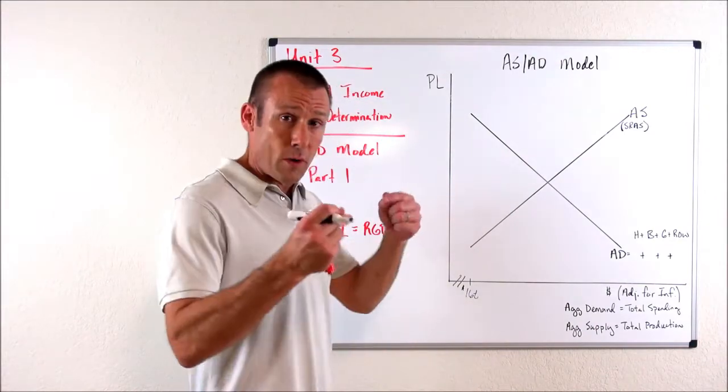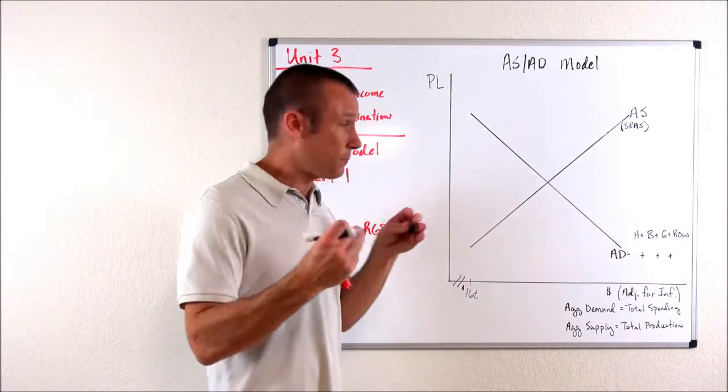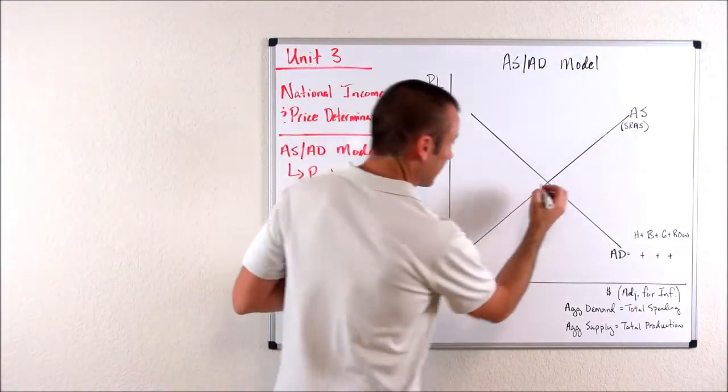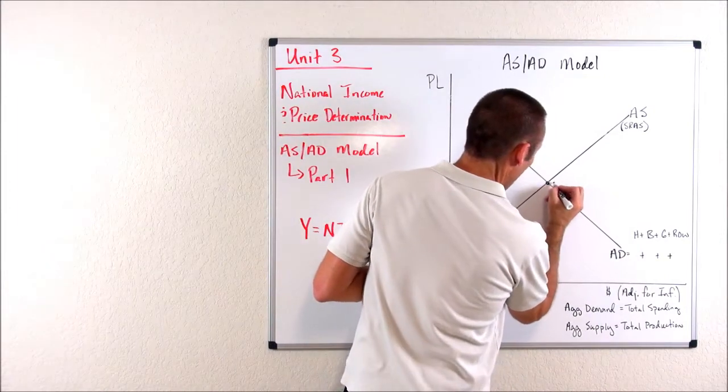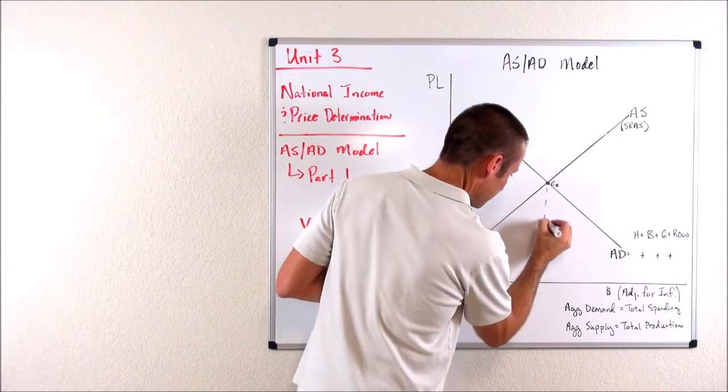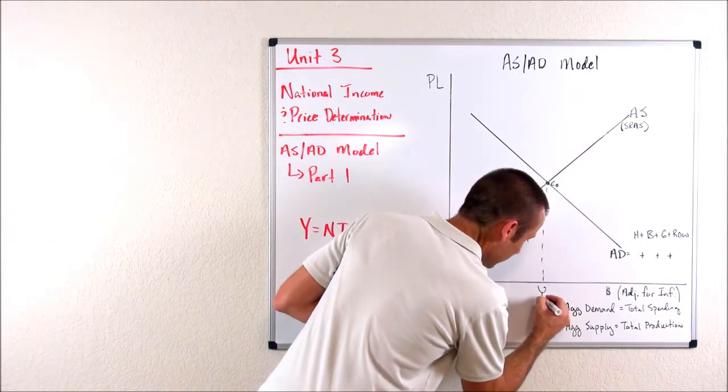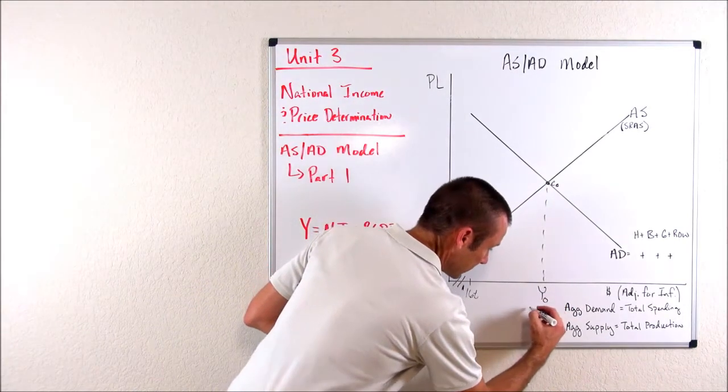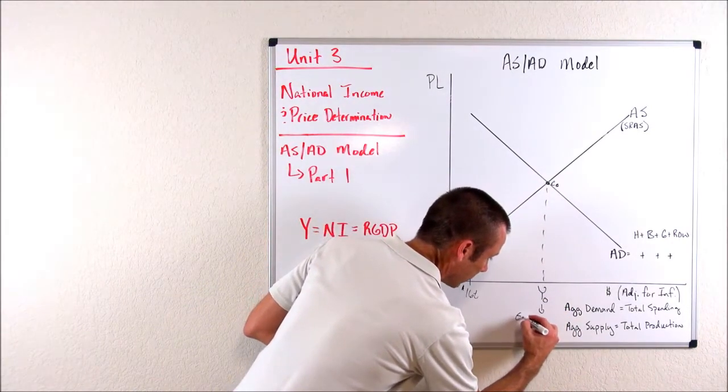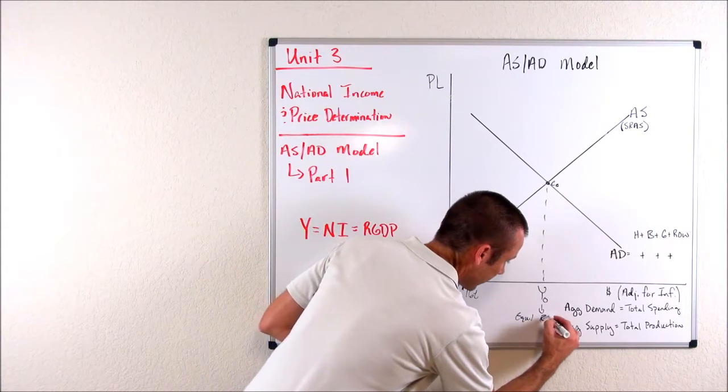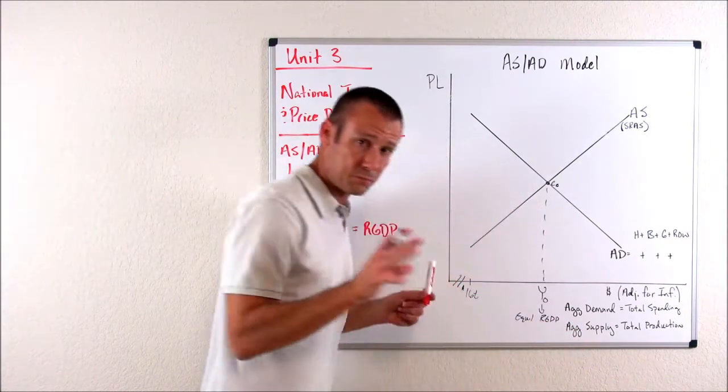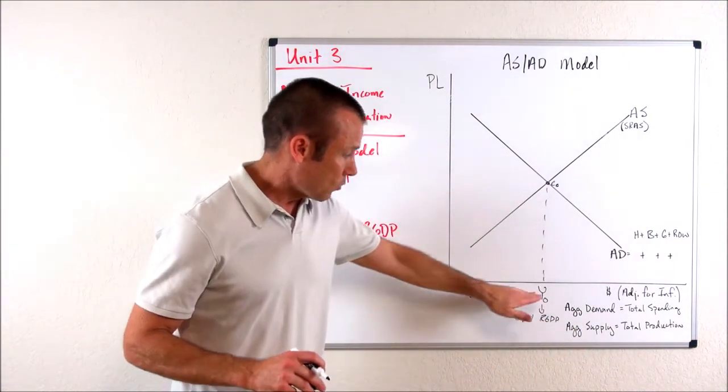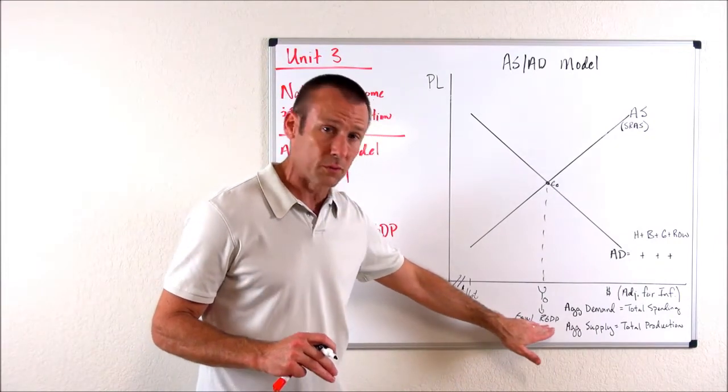Now, where those two things end up meeting up together, that equilibrium point is going to determine Y sub zero, which is what we would call our equilibrium real GDP. And I'm going to explain that in just a second.